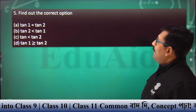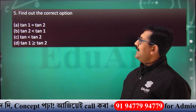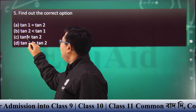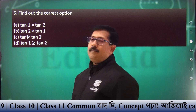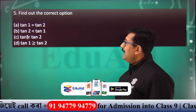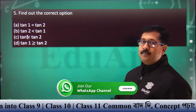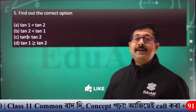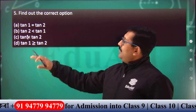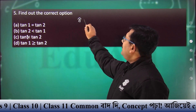Next question: find out the correct option. tan 1 equal to tan 2, tan 2 less than tan 1, tan 1 less than tan 2. Multi-quadrant — here we have tan 1 greater than or equal to tan 2. So 1, 2 is the value. The degree can change, the gradient can change. I can change the gradient of degree to convert. So why can you change the gradient? Pi radian equals 180 degree.